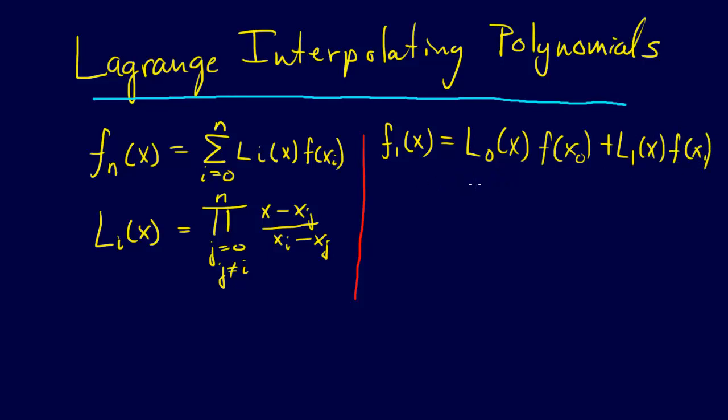Now what's L0 of x going to be? L0 of x is the product where j equals 0. So i starts out at 0 and then j starts out at 0, but it says j is not equal to i. So we have to skip that one. We're not going to include that one in the multiplication.